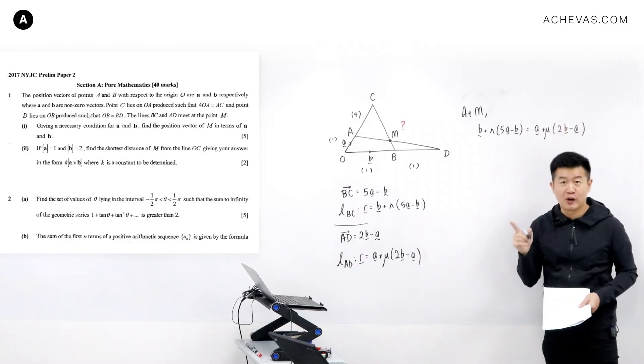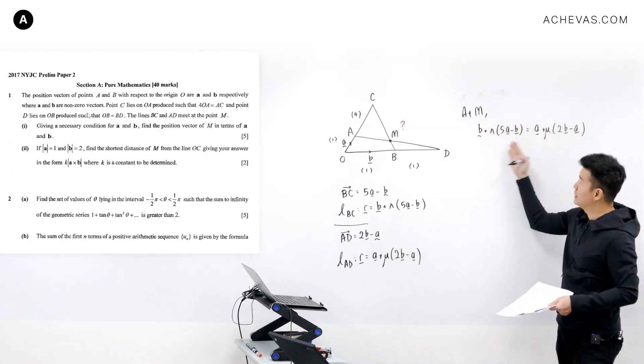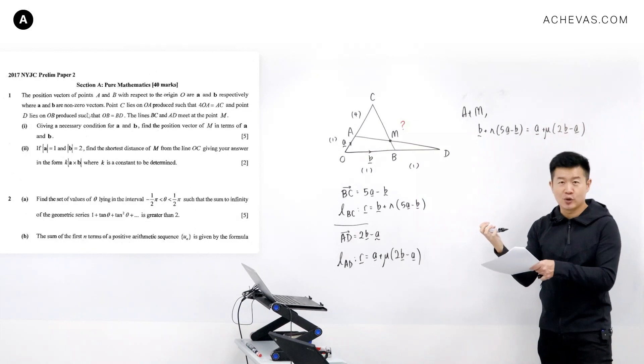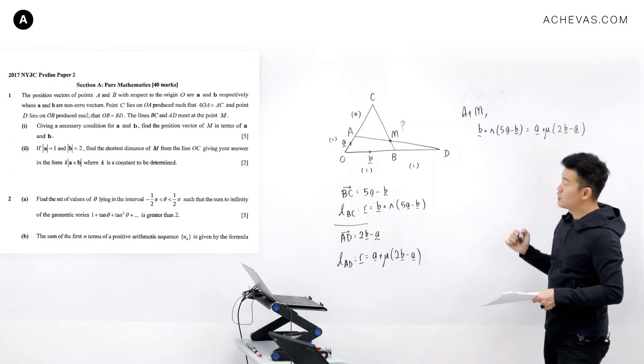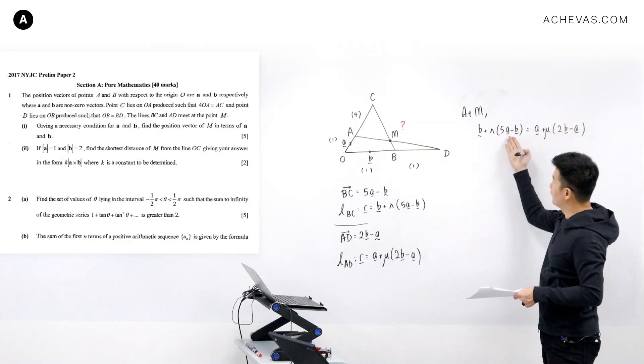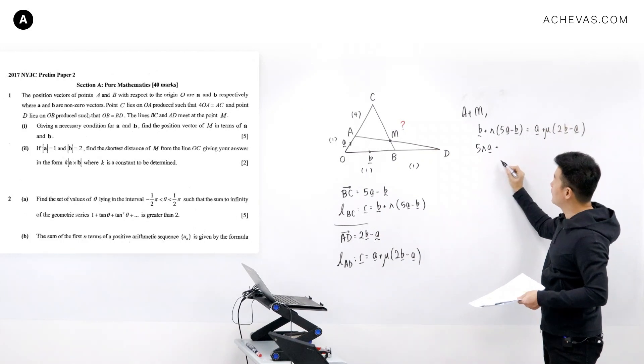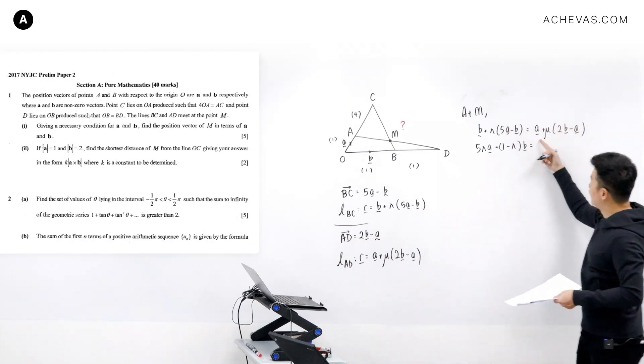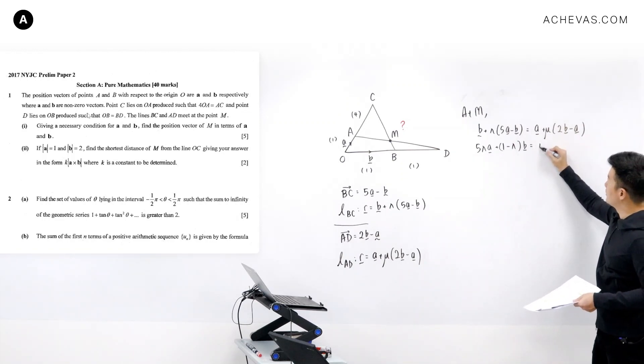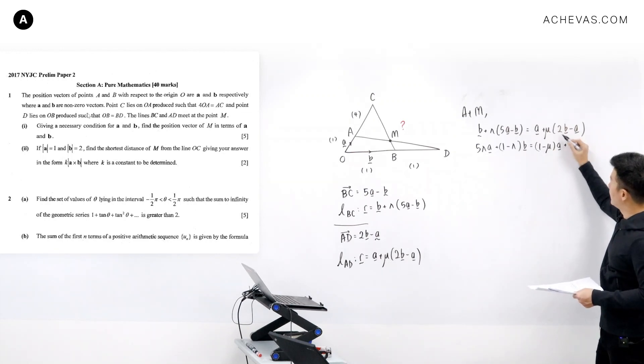And what we are trying to do now is to solve for lambda and mu. To do that, we have another process. The process will be to regroup the left and the right hand side to consolidate the coefficients of all the vectors a and b together. For example on the left hand side, the coefficient of vector a is 5 lambda, and the coefficient of vector b is 1 minus lambda.